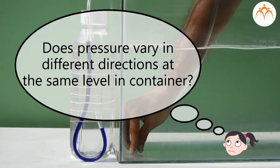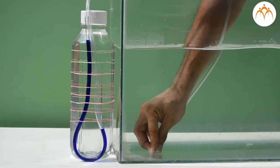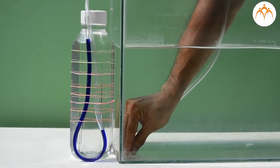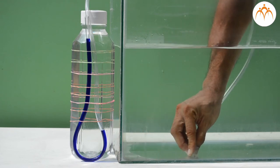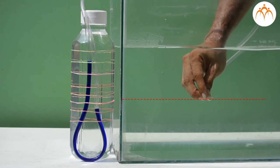Does pressure vary in different direction at the same level in container? If I take this tube and move it sideways or in other direction at the bottom, blue water level does not change. It means pressure is same in all directions at the same location inside liquid.